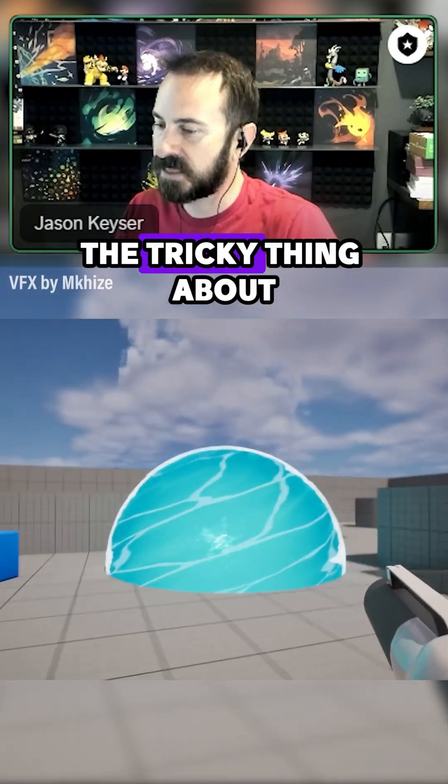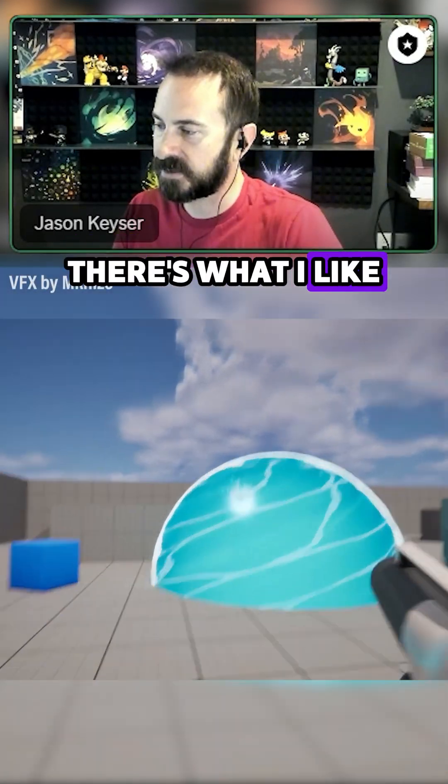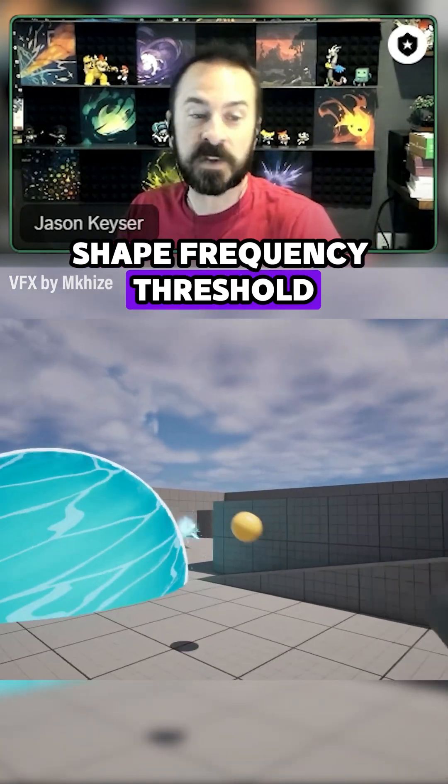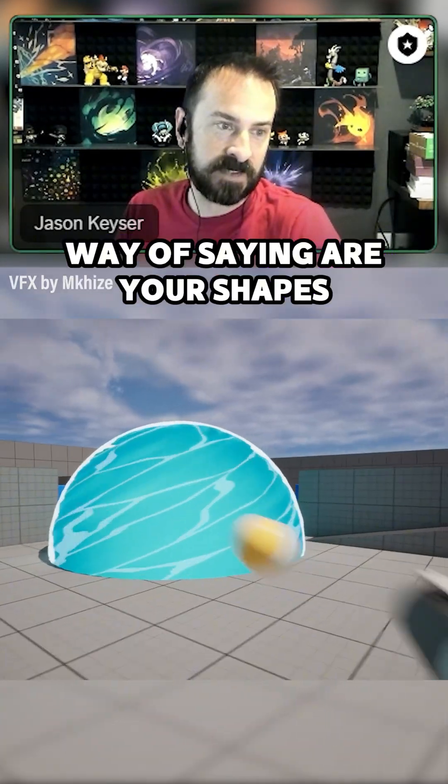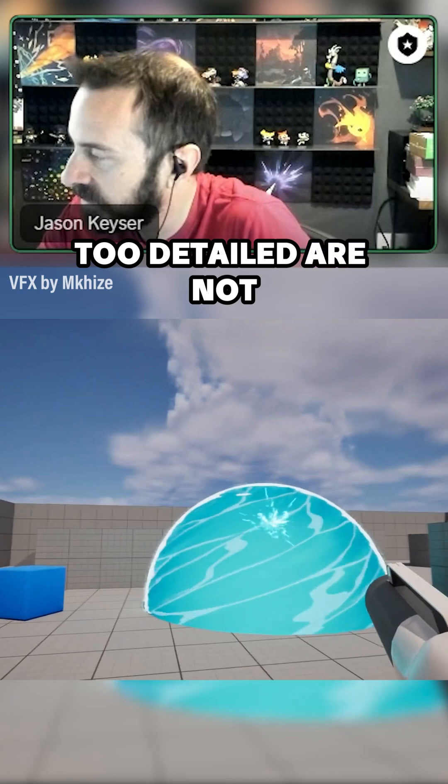You've got two styles going on. The tricky thing about style is there's what I like to call the shape frequency threshold, which is this fancy way of saying, are shapes too detailed or not detailed enough?